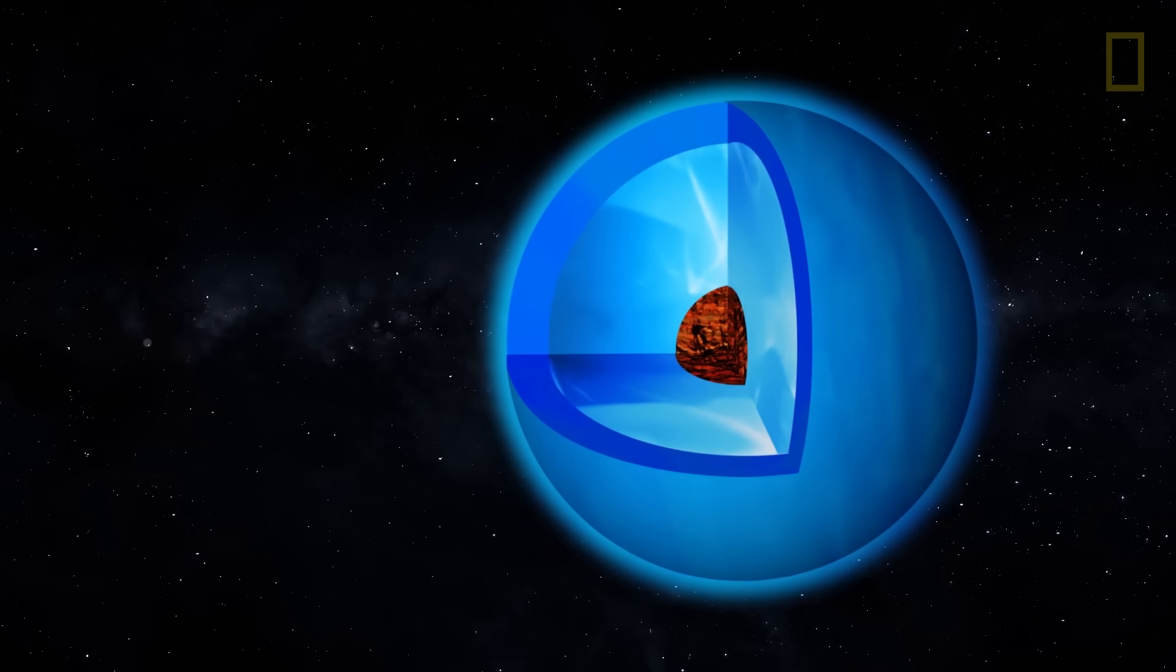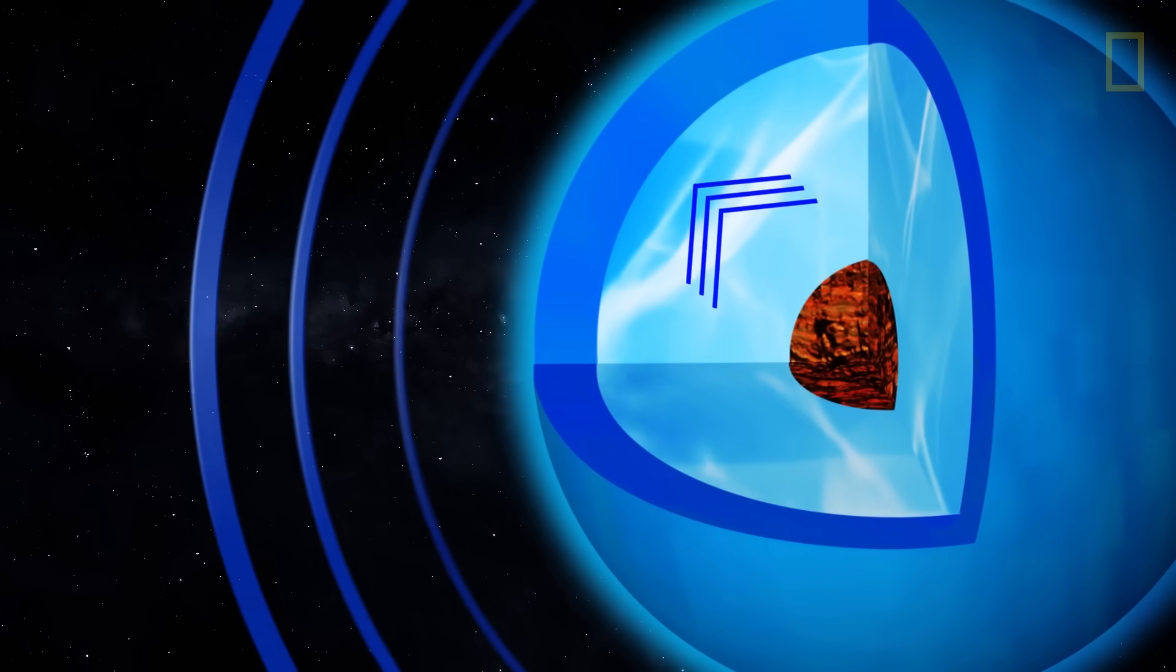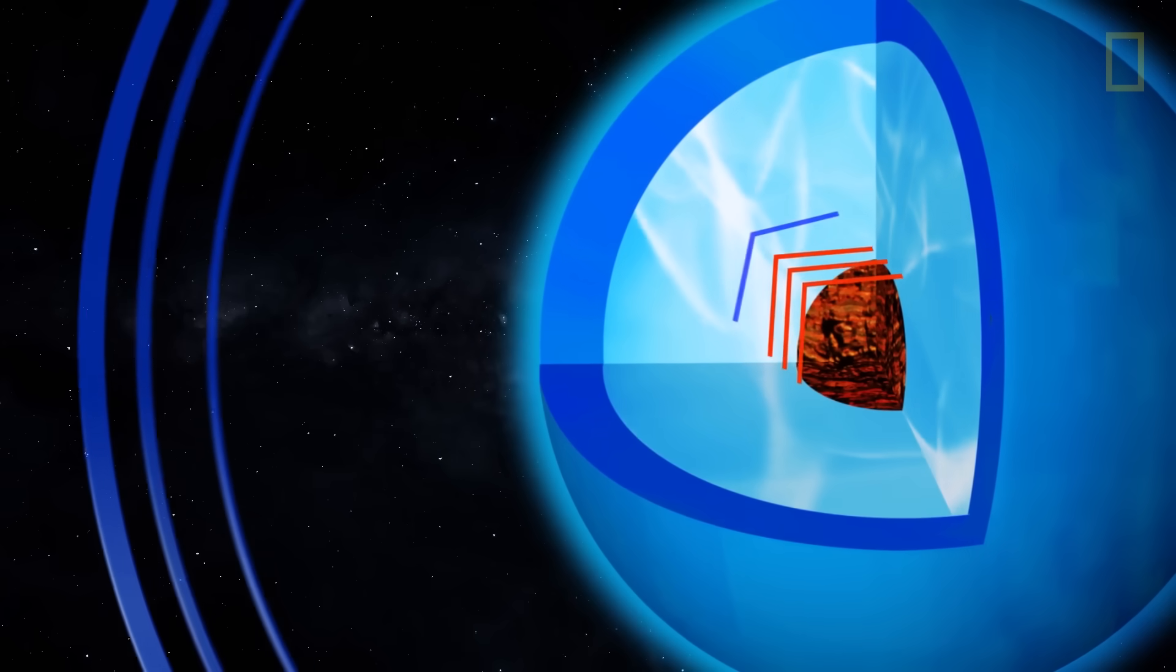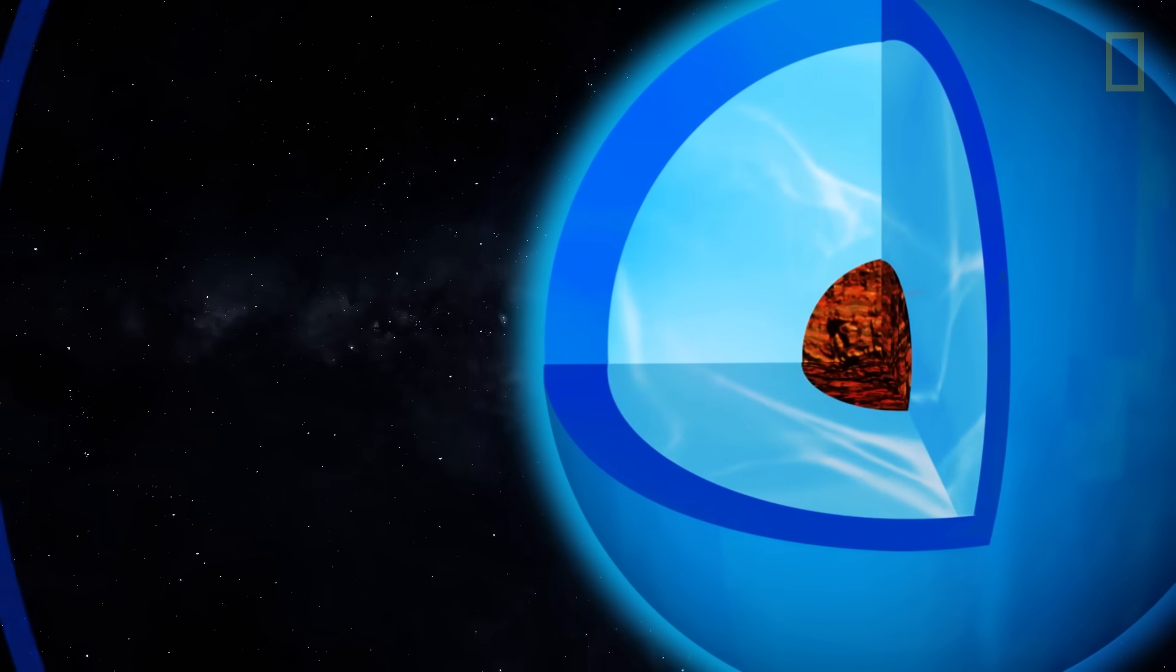This icy composition prevents Uranus from emitting much heat compared to other planets, making the blue world the solar system's coldest.